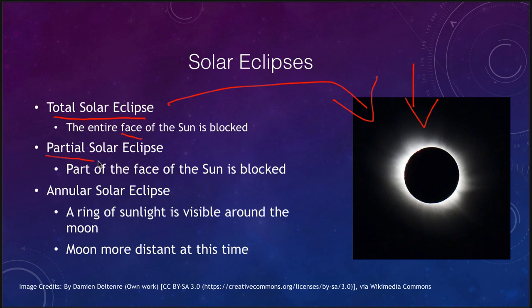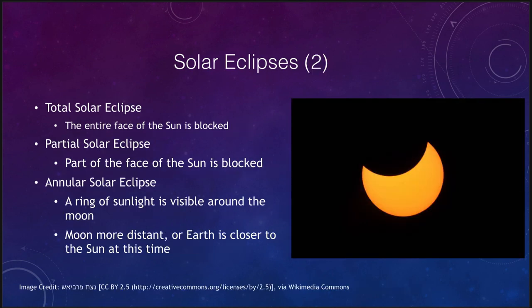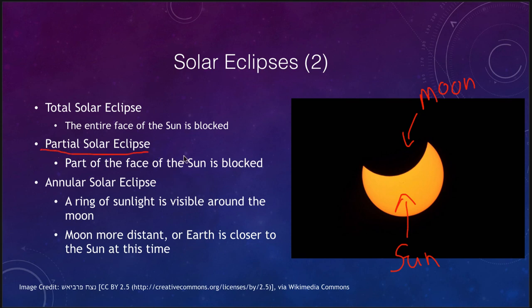In a partial solar eclipse, only part of the sun is blocked out. Here is an example: the sun is visible, and the moon is taking a bite out of it, blocking part of it. Only part of the sun is being blocked — the moon is taking a little bite out of the sun and blocking some of its light.